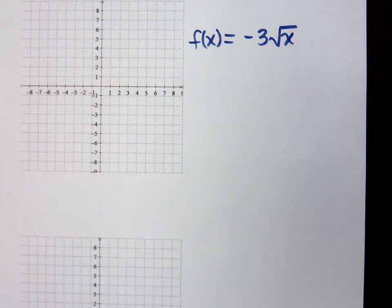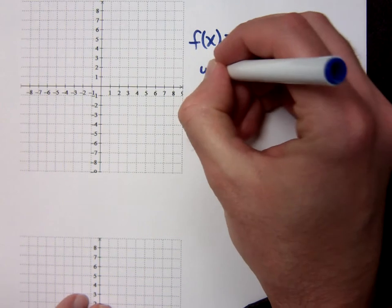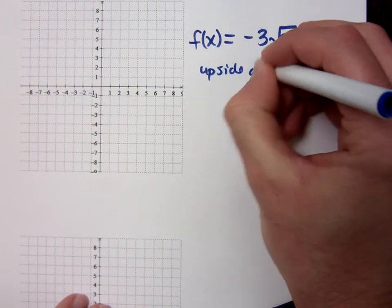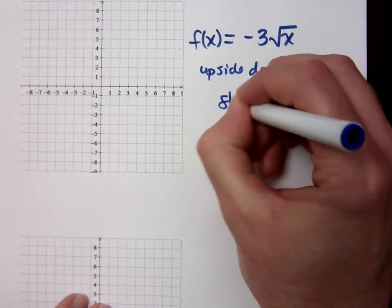Make sure that you write and read things correctly. This guy is not the cube root of x, is he? No. It's negative 3 times the square root of x, which means all those key values are now being multiplied times negative 3. And it will be a stretch. We talked about this guy. Not only is he upside down, but he will be a stretch.